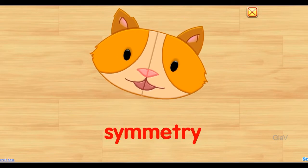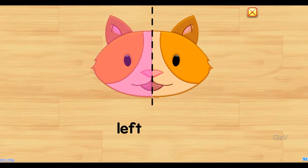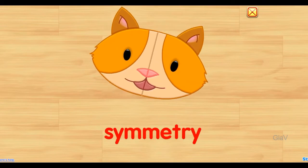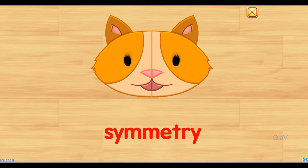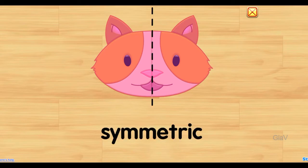Symmetry, symmetry. Draw a line — on the left, on the right, each side the exact same sight. One line down the middle will help you solve the riddle. Symmetry, symmetry — it's so easy you can see. When both sides are the same, then symmetric is the name.